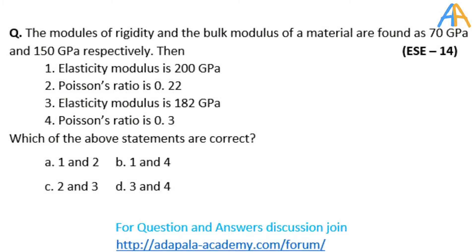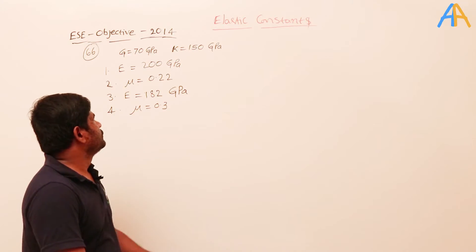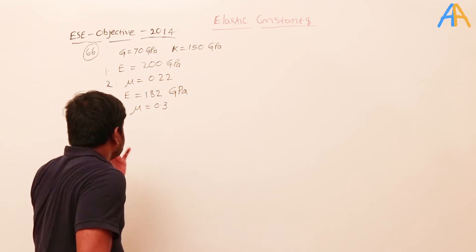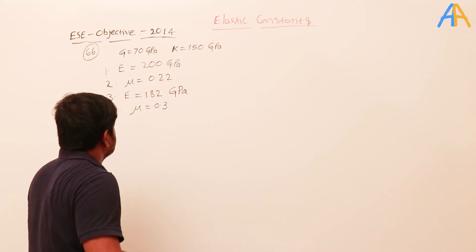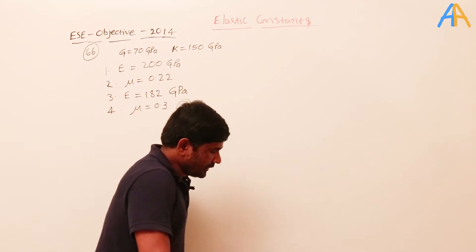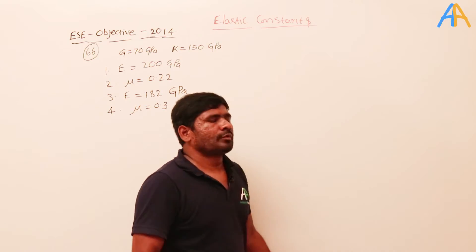Next question: the modulus of rigidity and the bulk modulus of a material are found to be 70 GPa and 150 GPa respectively. Then we have some statements - elasticity modulus is 200 GPa, μ is 0.22, E is 182 GPa. We need to see which statements are correct.